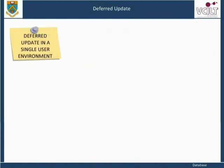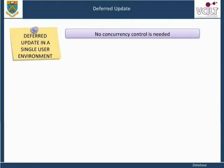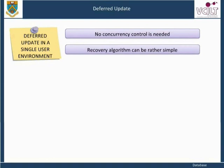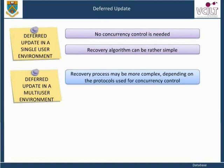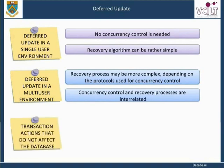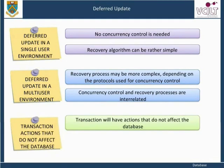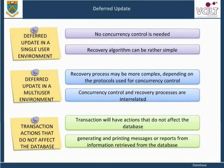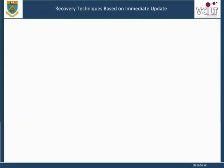Deferred update in a single user environment: no concurrent access control is needed, so we can understand the recovery process independently of any concurrency control method. In such an environment, the recovery algorithm can be rather simple. For a multi-user system with concurrency control, the recovery process may be more complex depending on the protocols used for concurrency control. The concurrency control and recovery processes are interrelated. A transaction will also have actions that do not affect the database, such as generating and printing messages or reports from information retrieved from the database.